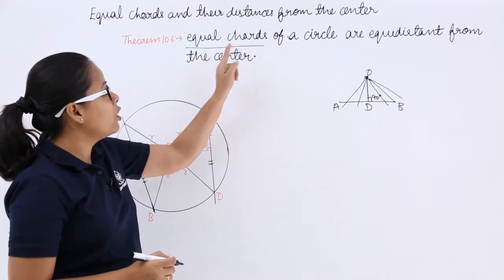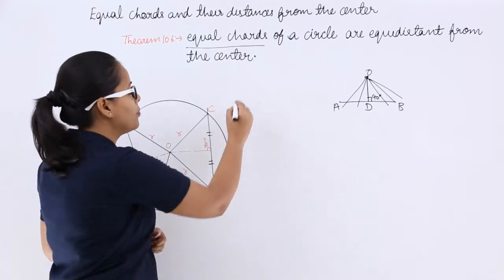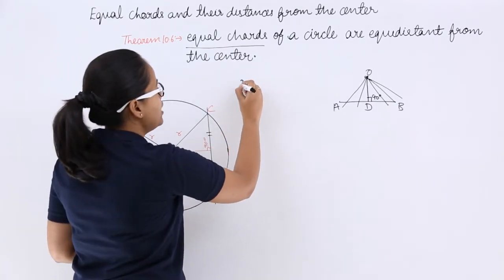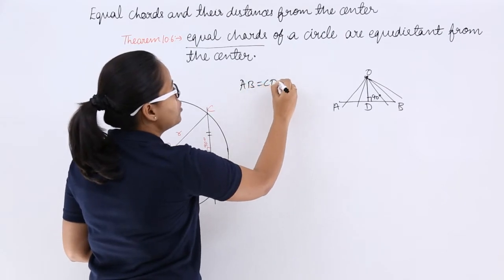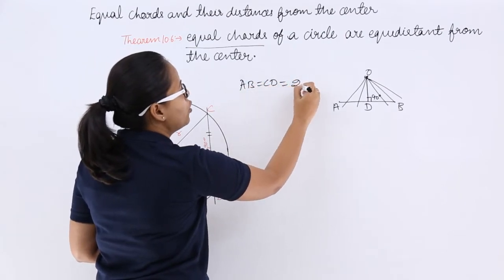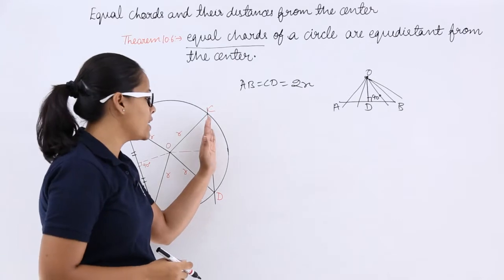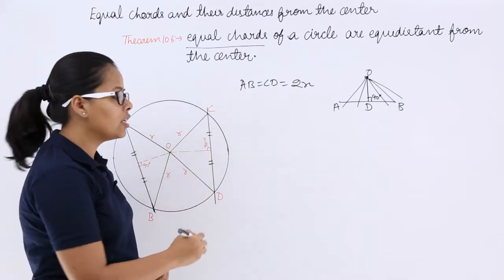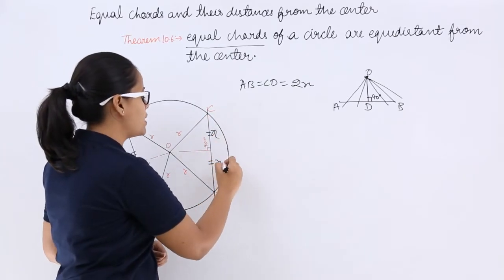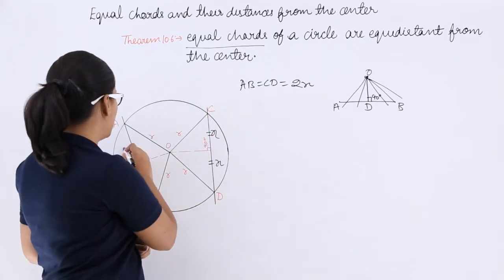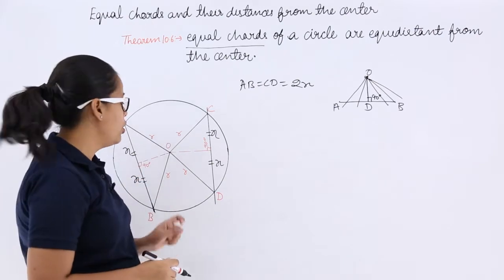It has been given that the chords are of equal length. Let's suppose AB is equal to CD, which equals 2x. When the perpendicular bisects them, each half becomes x — so both halves of AB are x, and both halves of CD are x as well.